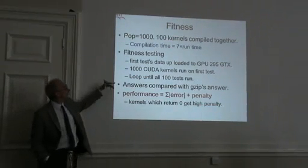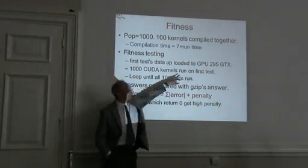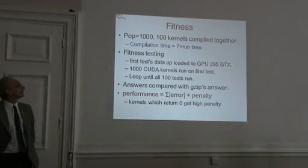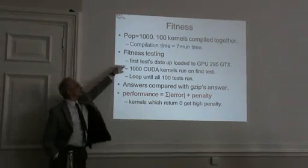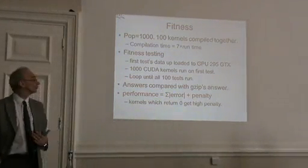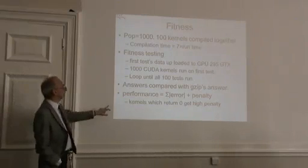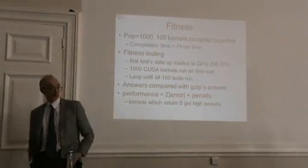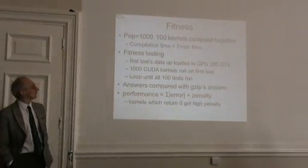The way we do the test cases is we load one test onto the graphics machine — the GTX 205 — and we then run our whole population on that. We record the answers they've produced and go on to the next one, looping around 100 times, each time comparing the outputs of the evolved individuals with what they should have produced according to gzip. The performance measure is the sum of the absolute error plus penalty terms — the penalty terms ensure that kernels that just return zero all the time don't get many children.